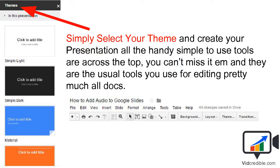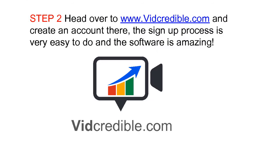Simply select your theme on the far right, and then create your presentation. All the simple tools are right across the top. You can't miss them — just hover over them for a second and they'll tell you what they are: add text box, add shapes, backgrounds, layout, et cetera. Congratulations, you have your presentation made.